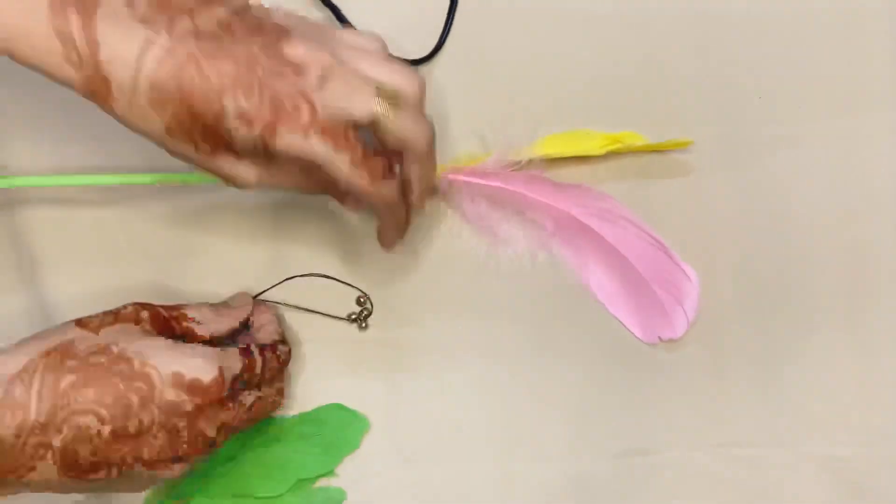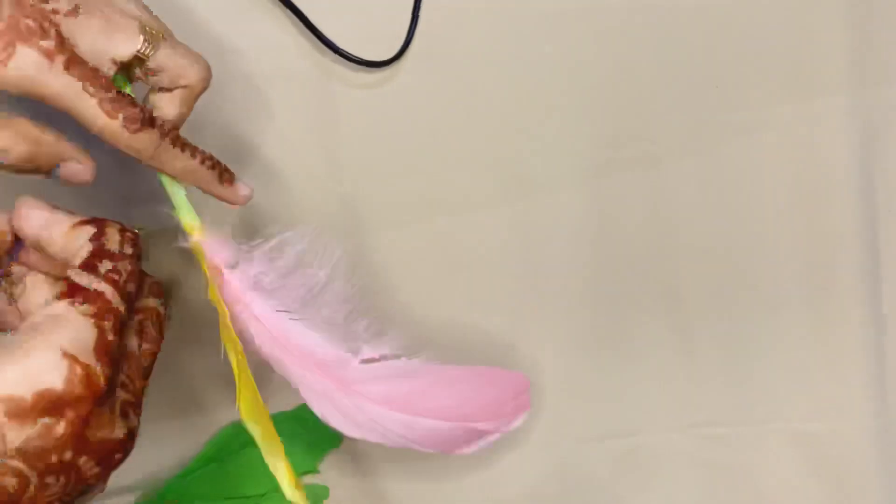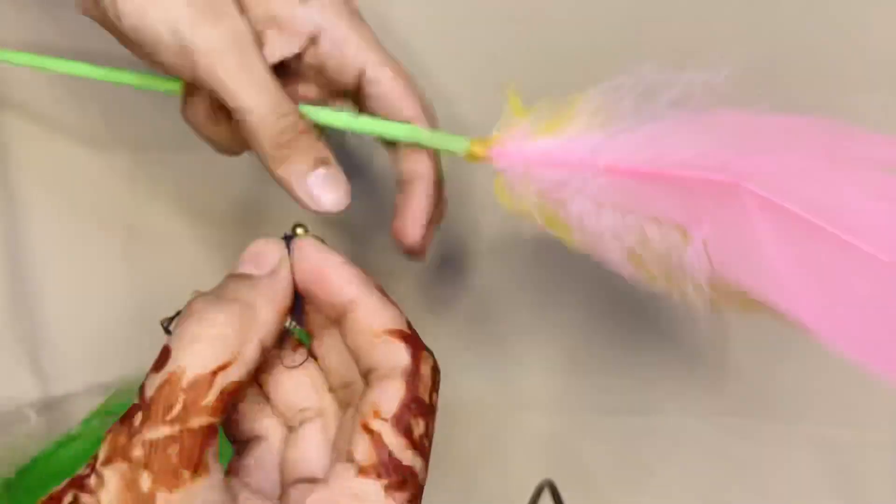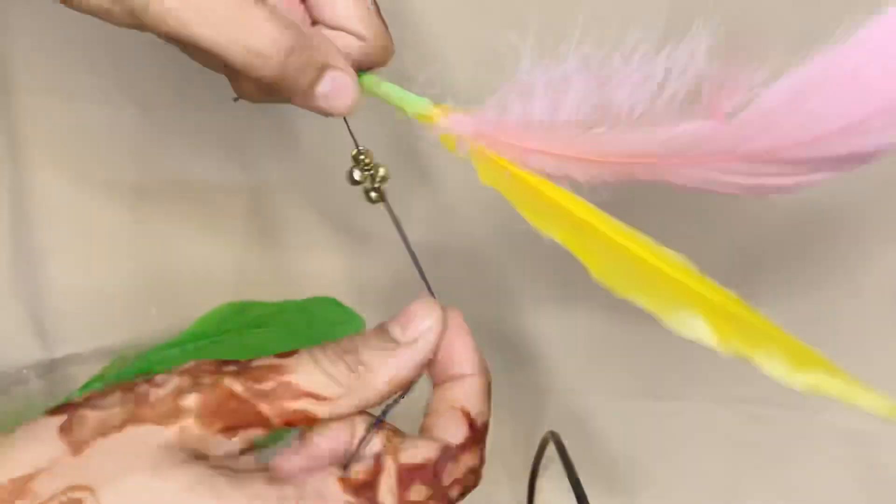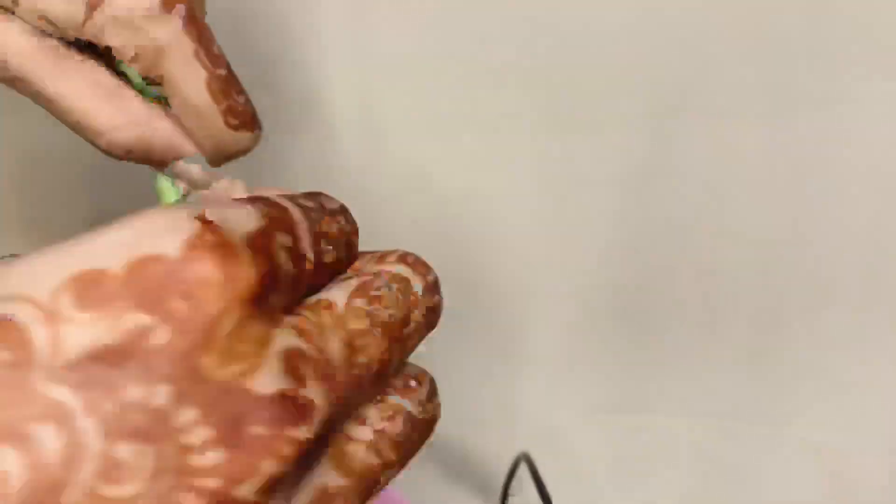The feathers are very important because cats love them as much as bells. So don't make a feather toy without the feathers because this is very important.